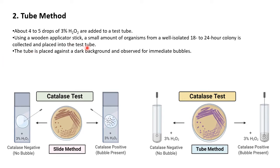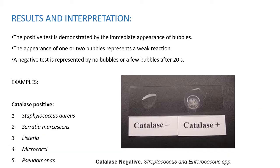Once the culture is added to the test tube, place it against a dark background and observe for immediate bubbles. No bubbles means catalase negative; presence of bubbles means catalase positive. For interpretation: a positive test is demonstrated by the immediate appearance of bubbles — effervescence. One or two bubbles represent a weak reaction. A negative test is represented by no bubbles, or a few bubbles appearing after about 20 seconds.